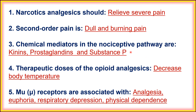Let us start with the important points of this chapter. First, narcotic analgesics should relieve severe pain. Second, second-order pain is dull and burning pain. Third, chemical mediators in the nociceptive pathway are kinins, prostaglandins, and substance P — if they are released from nerves, they will produce pain. Fourth, the therapeutic dose of opioid analgesic decreases body temperature.